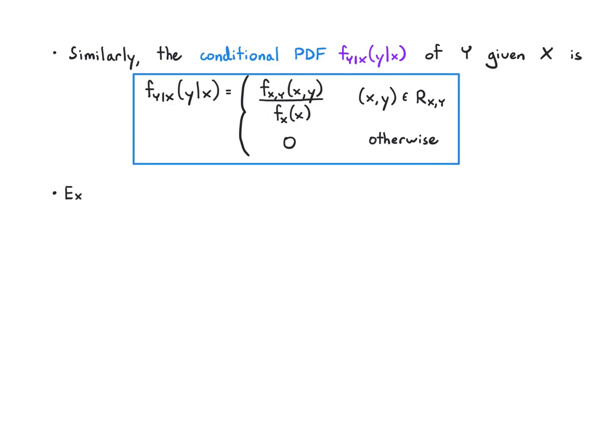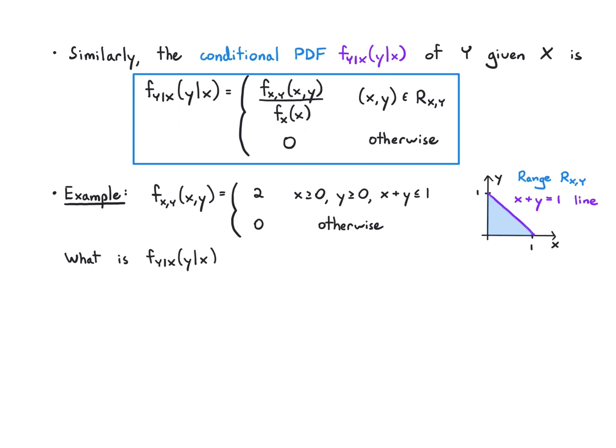Let's work out a simple example. So in this case we're going to have a joint PDF that is flat, so in this case it has height 2 when x is positive or non-negative, y is non-negative, but x plus y is less than or equal to 1, and it's 0 otherwise. So it helps to draw the range. In this case we draw the range by writing this line x plus y equals 1 and noting that we have to stay below that line and above x equals 0 and y equals 0. That's the range and we ask what is the conditional PDF in this particular case. What we notice is the first thing that we're going to need is the marginal PDF and we aren't given that directly.